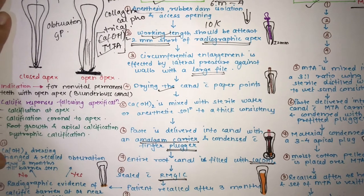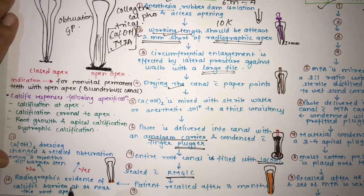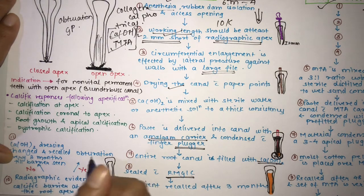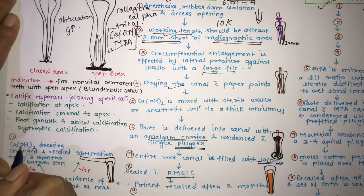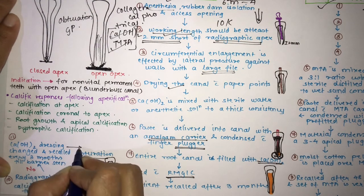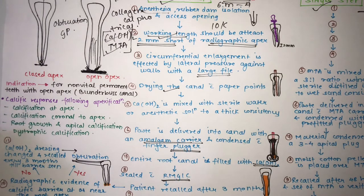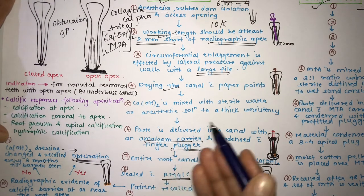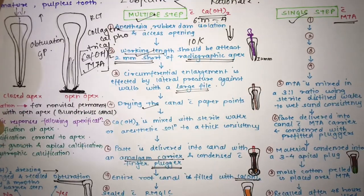The patient is recalled after three months. There are two scenarios: if a calcific barrier is seen radiographically, proceed to obturation. If no calcific barrier is seen radiographically, change the calcium hydroxide dressing and recall the patient every three months until the barrier is seen. Once the barrier is confirmed, complete the obturation. This is the multi-step apexification procedure using calcium hydroxide.